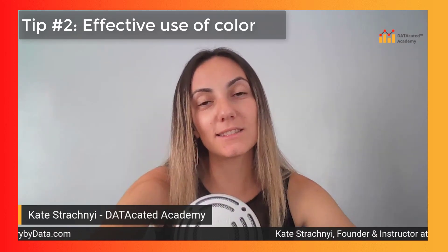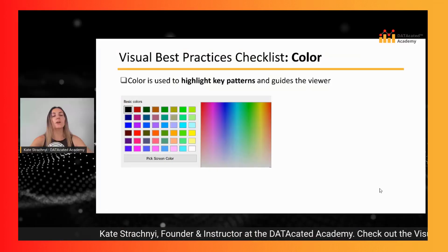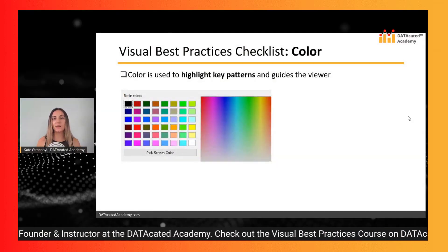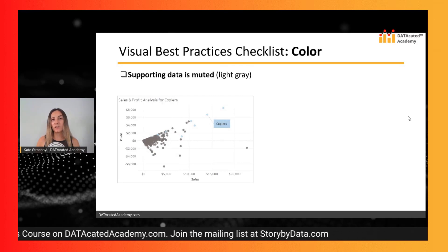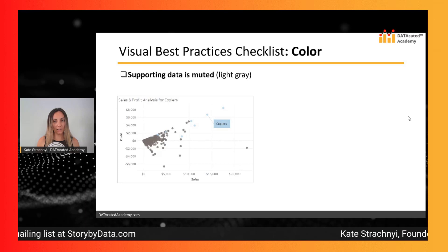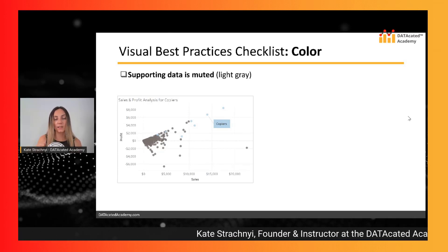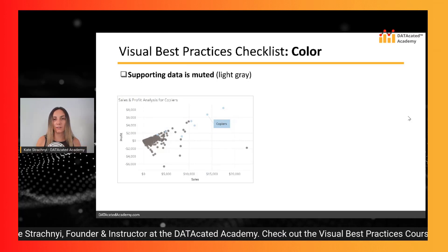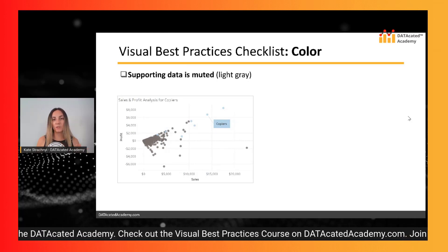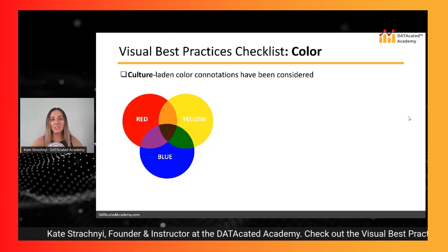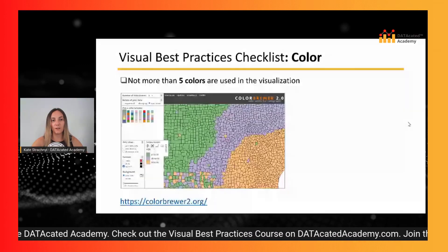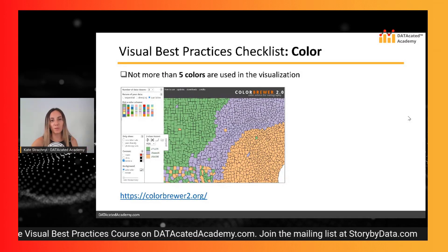The second tip is the effective use of color. Proper use of color can really help you tell the story of your data. Color needs to be used to highlight key patterns and guide the viewer. One best practice is that light gray is typically your best friend — all your supporting data like grid lines, the zero line, axes, and axis titles can use gray because it's muted. You can then use a highlight color like blue to draw attention to key points. Also keep in mind culture-laden color connotations, and don't use more than five colors in your data visualization.